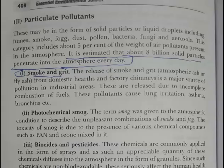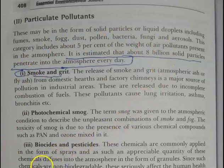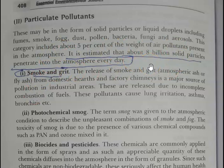The major air pollutants are of two types: gaseous pollutants and particulate pollutants. Particulate pollutants may be in the form of solid particles or liquid droplets, including fumes, smoke, fog, dust, pollen, bacteria, fungi, and aerosols. This category includes about 5% of the weight of air pollutants present in the atmosphere.